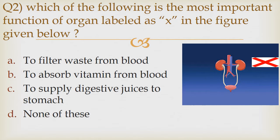Question number 2. Which of the following is the most important function of organs labelled as eggs in the given figure? Option A: To filter waste from blood. Option B: To absorb vitamin from blood. Option C: To supply digestive juices to the stomach. Option D: None of these. The answer is Option A — to filter waste from blood.